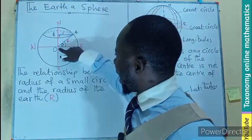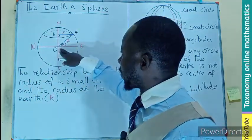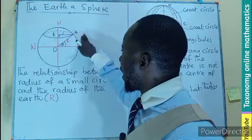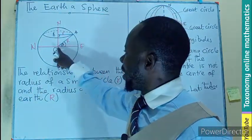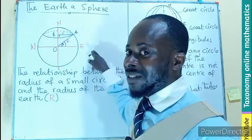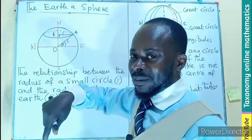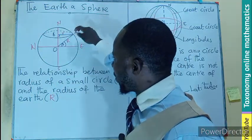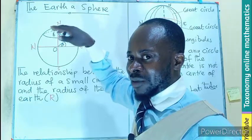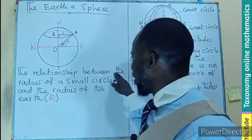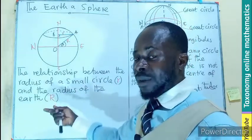The line from the center O to point A also describes the radius of the sphere. Taking these two radii, we form a right-angled triangle OAB, since the center B is parallel to the East-West direction. The angle at the center of the sphere is the same as the angle formed between the radius of the sphere and the radius of the small circle. This gives us the connection between the two radii.